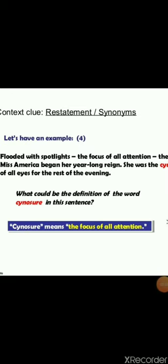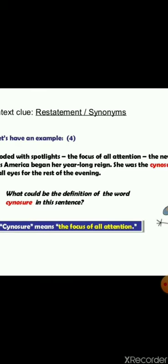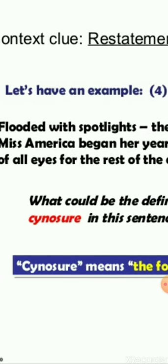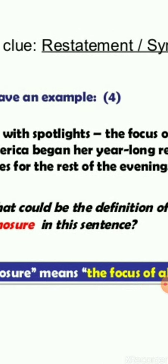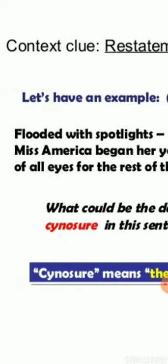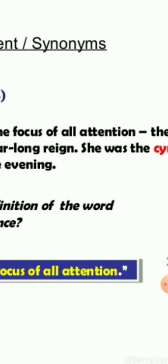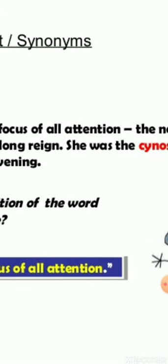Another example: 'Flooded with spotlights, the focus of all attention, Miss America began her year-long reign. She was the cynosure of all eyes for the rest of the evening.' You might not know cynosure, but reading the preceding text — flooded with spotlights, focus of all attention — gives you the clue. Cynosure means being the focus or center of attention. You got the meaning from the context without even knowing the word. That is how you follow the restatement clue mechanism.